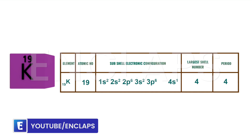Now consider the case of potassium. Potassium has its atomic number 19, so its subshell electronic configuration can be written as 1s2, 2s2, 2p6, 3s2, 3p6, 4s1. Here you can see that the largest shell number is 4. That means potassium belongs to the fourth period in the periodic table. In a similar manner, if you write the subshell electronic configuration of any element, you can simply predict the period number in which the element belongs to.